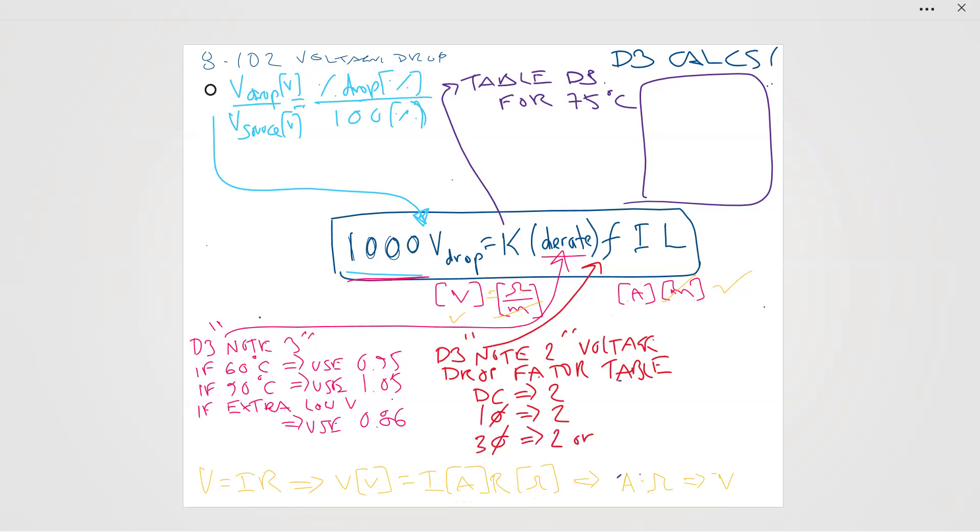Or if it is three wire, line to line, no ground, then it is 1.73. If it is four wire, it is 1.73. So that's that factor.